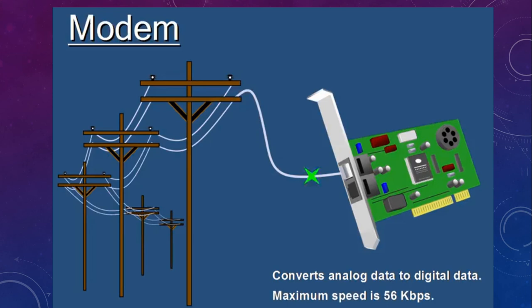Then we have a modem, which is a device normally used to convert analog signals to digital data. Electrical signals come in the form of analog signals, so we use a modem that converts analog signal to digital data. Modem stands for modulation and demodulation. It modulates and demodulates the data, and the maximum speed we normally get from a modem is around 56 Kbps.